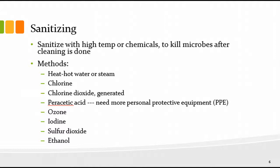There are many other options out there. Peracetic acid is used by some wineries, but you need higher amounts of personal protective equipment because it's a little more dangerous. A lot of people use ozone these days. You can use iodine. Sulfur dioxide works — we add that to wine and burn sulfur wicks in empty barrels. So you can use sulfur dioxide.